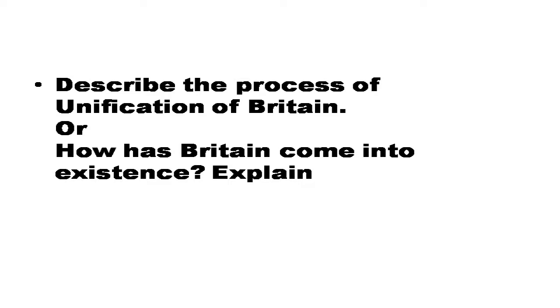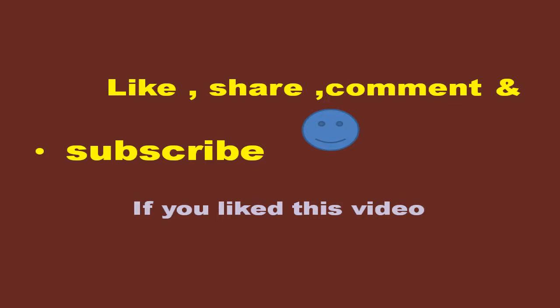Question number nine: Describe the process of unification of Britain, or how did Britain come into existence? Nationalism in Britain was different from the rest of Europe — it was not the result of a sudden uprising or revolution, but the result of a long drawn-out process. There was no British nation prior to the 18th century. The inhabitants of the British Isles were ethnic groups — English, Welsh, Scots or Irish.